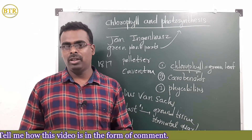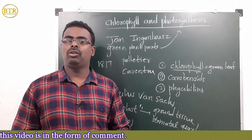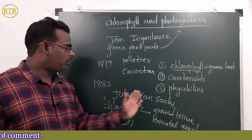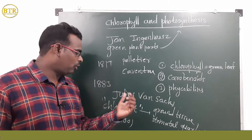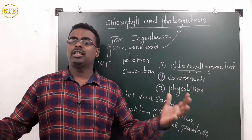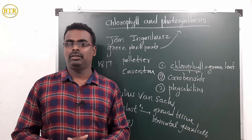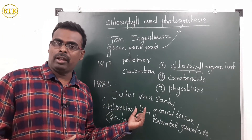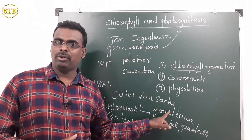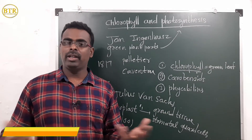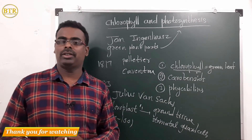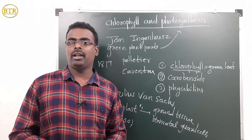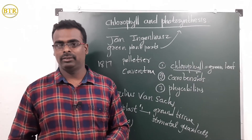Six decades after Pelletier and Caventou, in 1883, Julius van Sachs found that chlorophyll is present in a special cell organelle called the chloroplast. We can find approximately 40 to 100 chloroplasts in ground tissue and stomatal guard cells. The chloroplast is therefore a very important cell organelle for carrying out photosynthesis. Thank you.